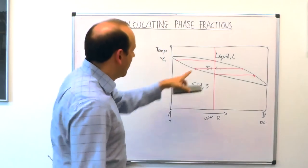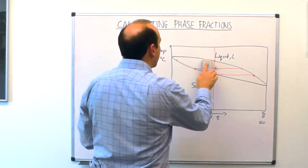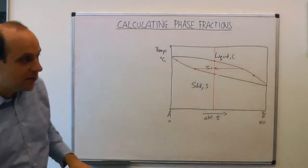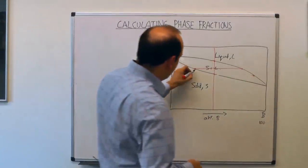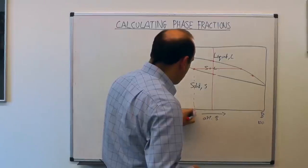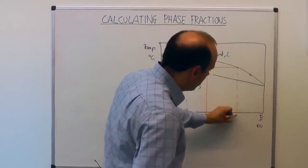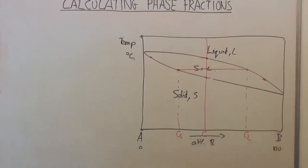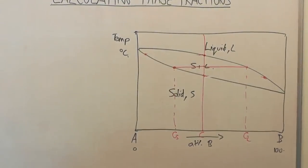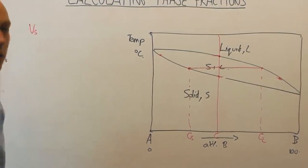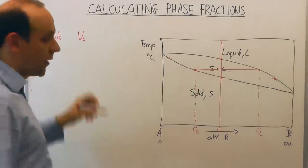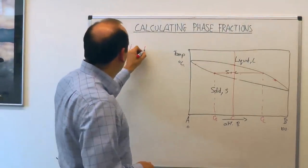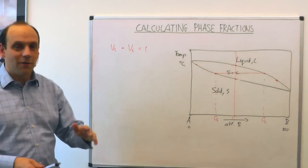We'll look at that at a midpoint in solidification. At this midpoint in temperature, we have a composition of the solid, a composition of the liquid, and a composition of our alloy which we'll call C. We have a volume fraction of the solid and a volume fraction of the liquid, and we know that those two volume fractions must sum to one — it's either all solid, all liquid, or somewhere in between.